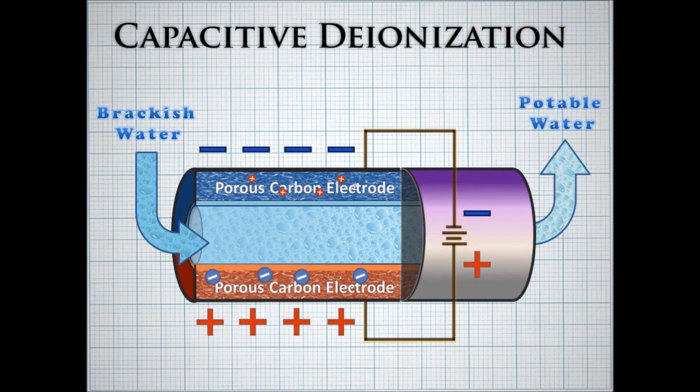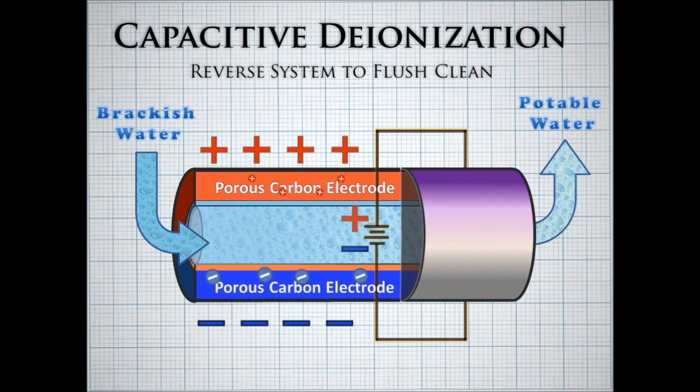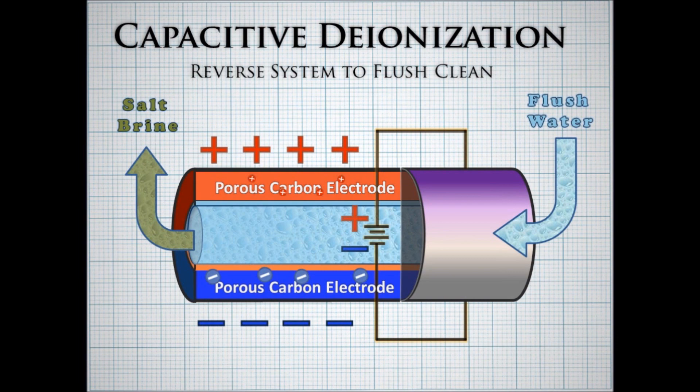You may be familiar with Brita-style carbon water purifiers which need to be replaced every few months after becoming fouled with salts. CDI allows us to clean and reuse the filter by simply reversing the flow of water and the current applied to the porous carbon electrodes. The salts are backwashed out in a concentrated brine solution.